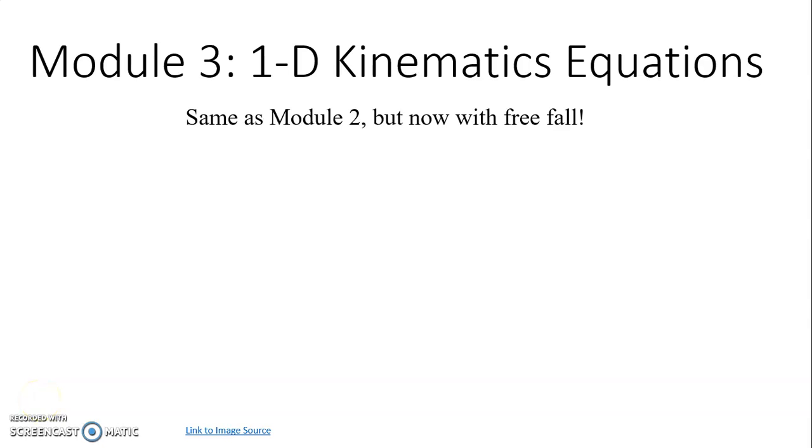Hello again everybody. Now we're in module 3. We're still in chapter 2. We're going to be dealing with the concept of free fall. We're still going to be using the same equations, the kinematic equations. They're on your equation sheet. There is a separate section where all of the x's have been replaced with y's because now we're going to be talking about motion in the vertical direction, the up and down motion.